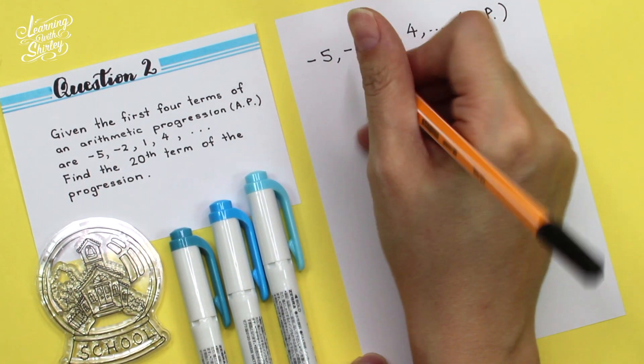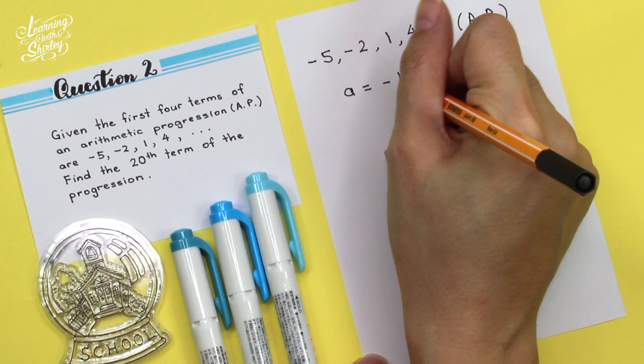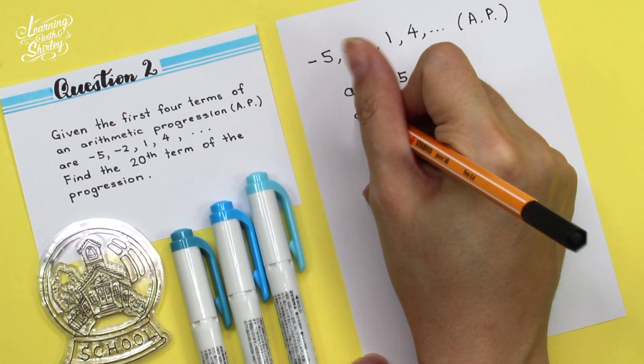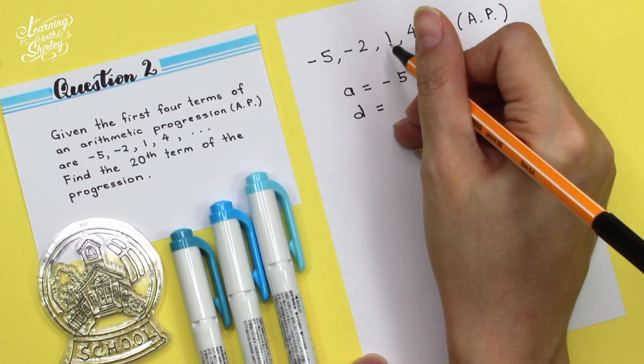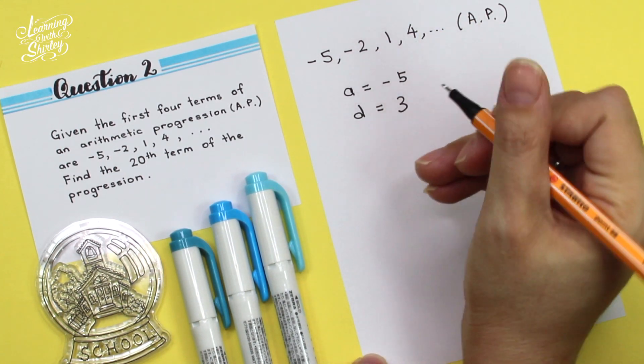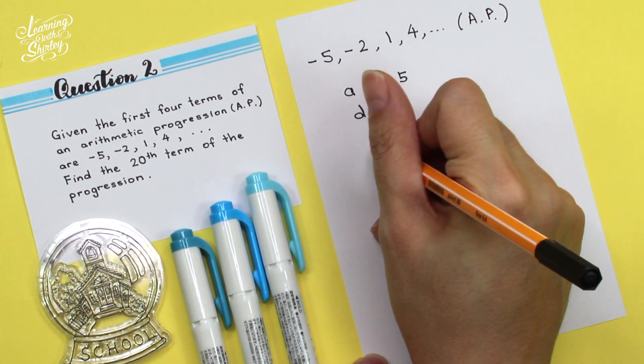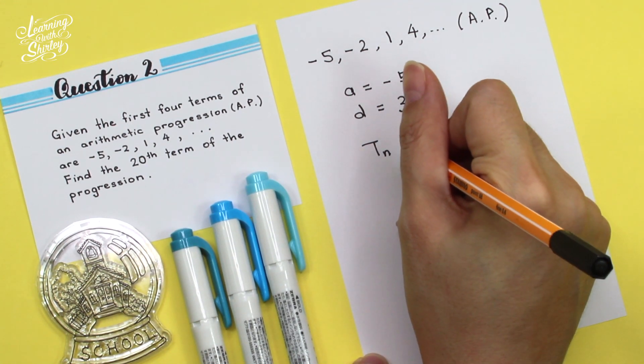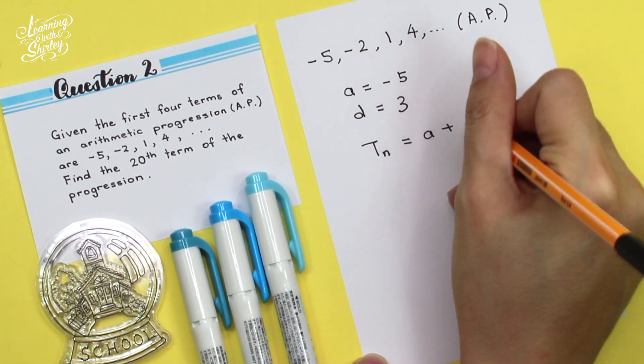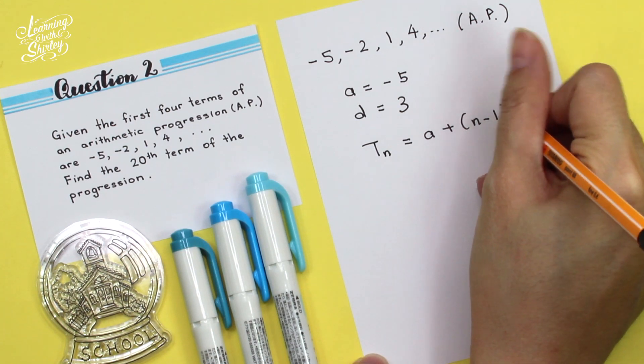So from here, the first term is negative 5. And the common difference is 4 minus 1 is 3. So to find the 20th term, we have to use the formula TN equals A plus N minus 1, D.